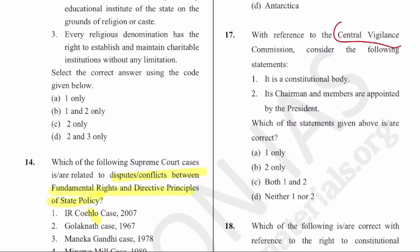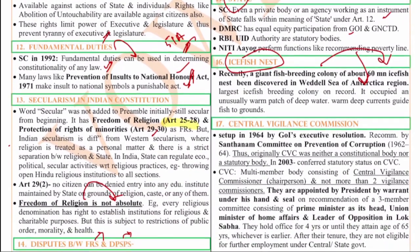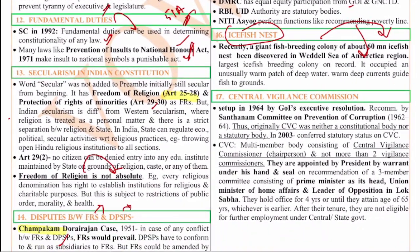The next question is on the Central Vigilance Commission (CVC). One statement says it is a constitutional body and another says the chairman and members are appointed by the President. The CVC is not a constitutional body - it is a statutory body. Originally it was formed by executive resolution, but in 2003 it was made a statutory body. The CVC is a multi-member body consisting of the Chief Vigilance Commissioner and not more than two Vigilance Commissioners. They are appointed by the President and hold office for four years or until 65 years of age.